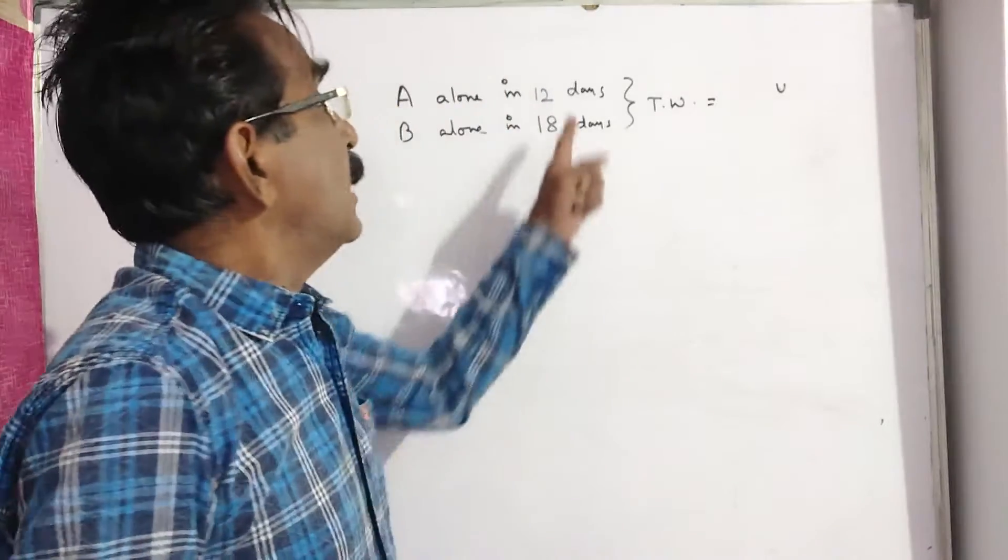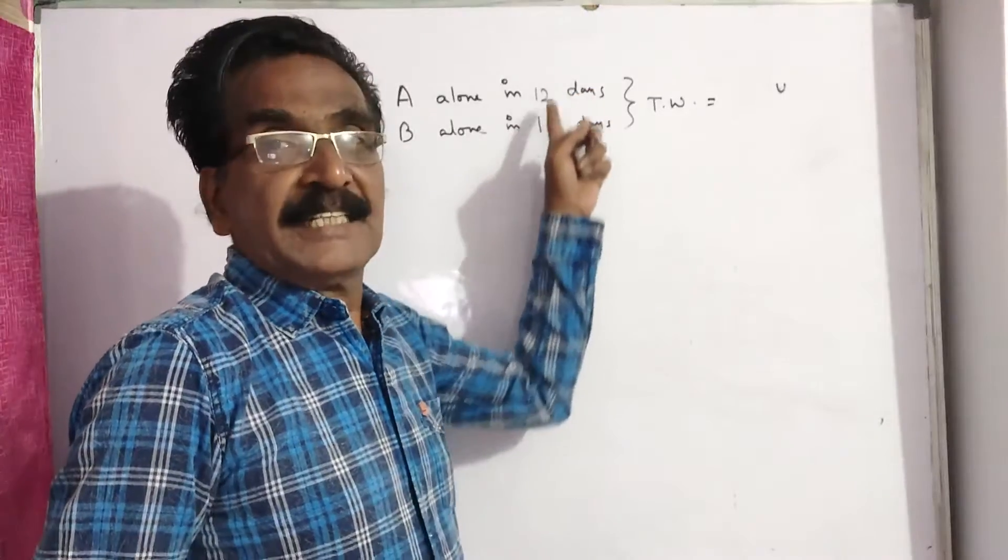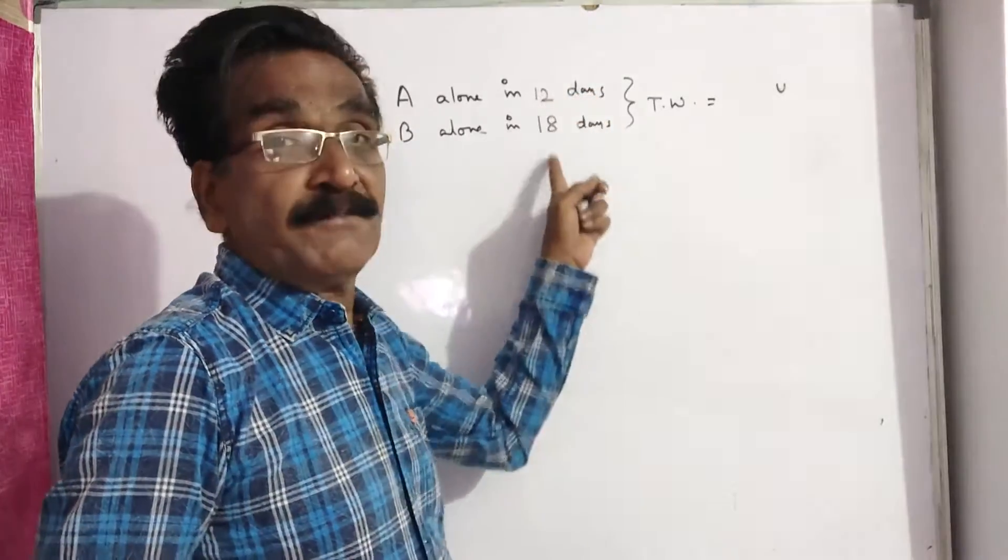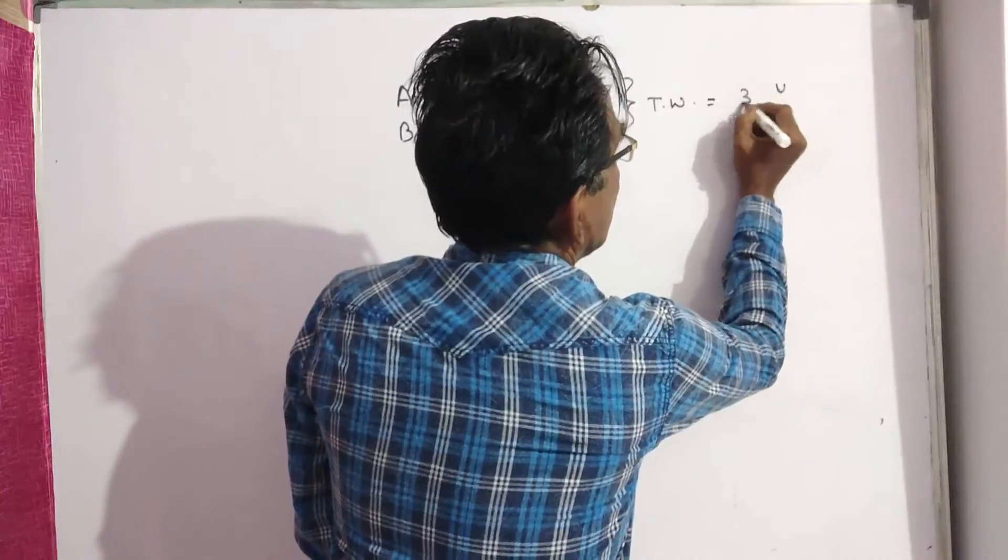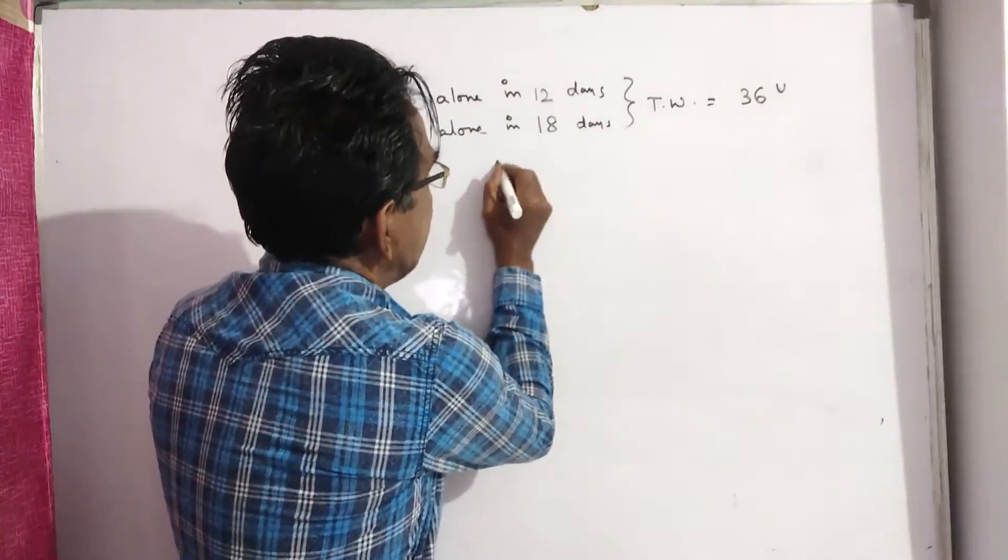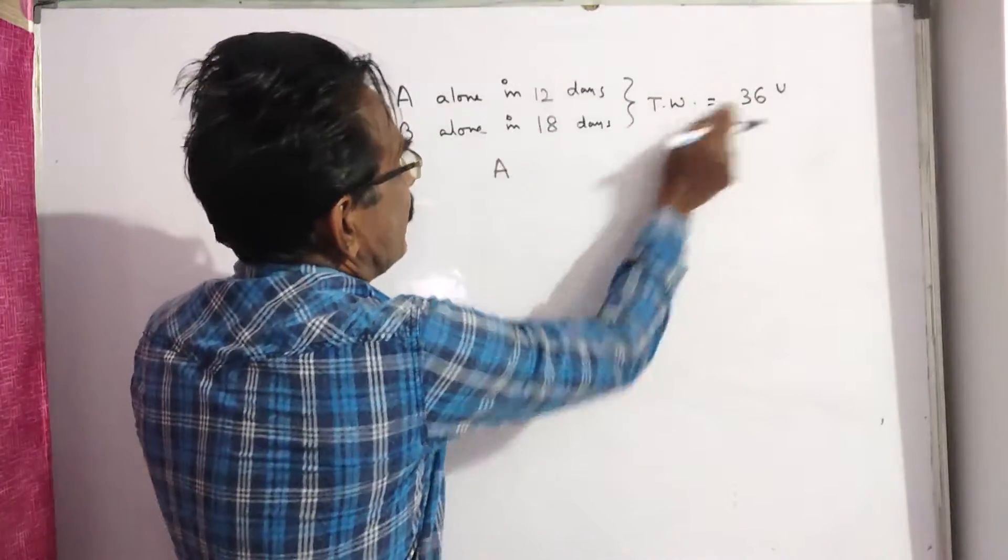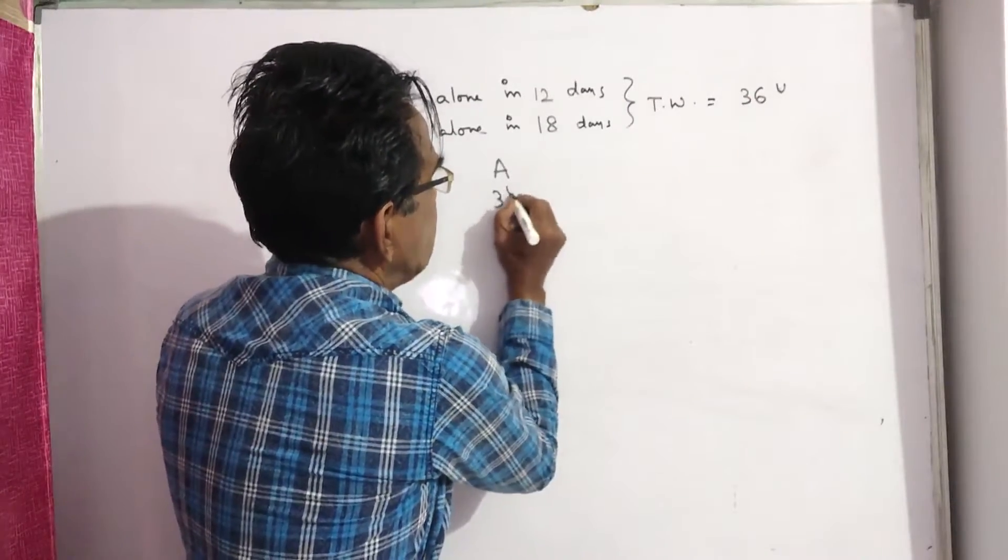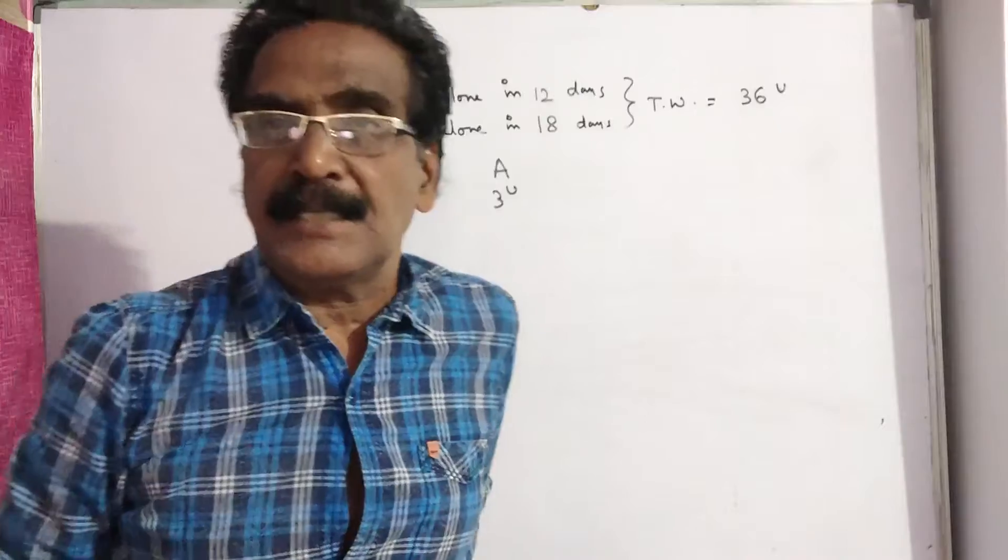Now let us say the total work is the LCM of these two numbers. Total work is 36 units. Then A completes 12 threes of 36, so A does 3 units per day.